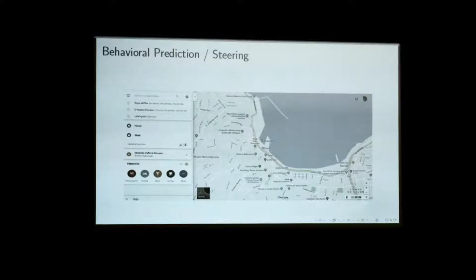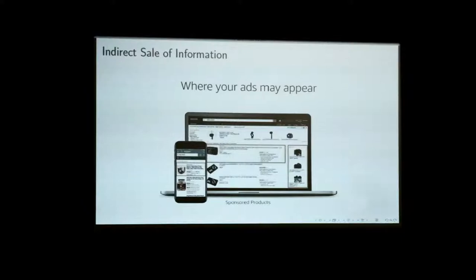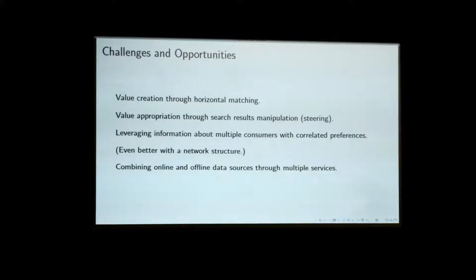Think about any mapping software that makes recommendations about where to go for lunch or where to stay overnight. Display advertising is another form of indirect sale of information. The opportunities are clearly many — we can create better matches and more value. The challenges are also many: it helps advertisers and intermediaries extract more surplus from consumers. One can leverage information from many consumers through correlation in preferences. If one has not only online but also offline data, that information can be augmented. If one has ideas about the network structure, that helps assess the value of information.